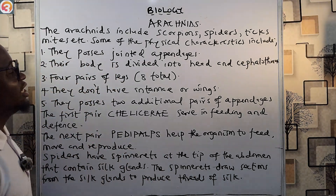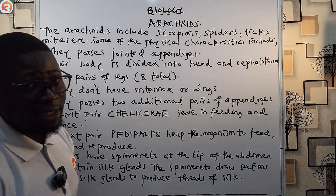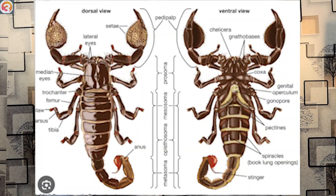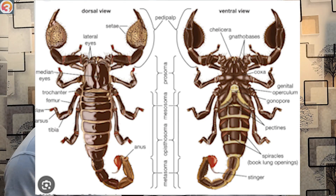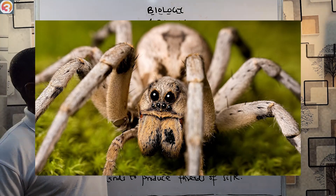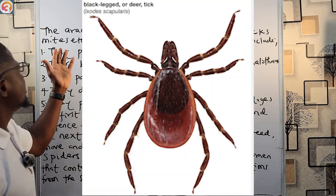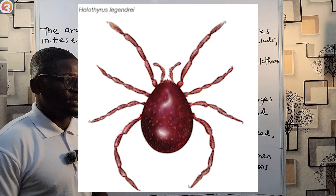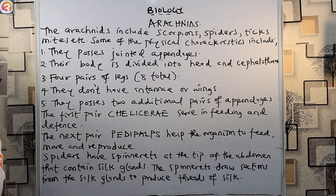Let's look at the arachnids. They include the scorpions — you've probably seen a scorpion before — the spiders, the ticks, the mites, and some other ones. Now let's look at some of the physical characteristics exhibited by these arachnids.